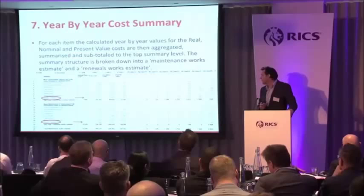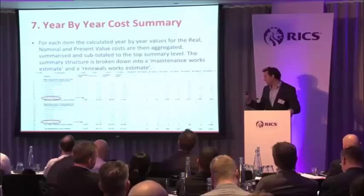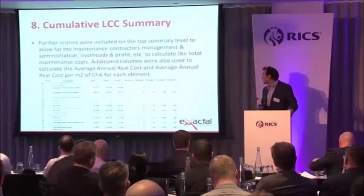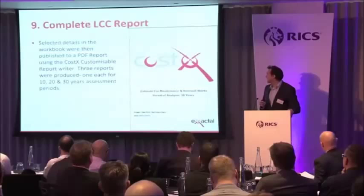Now what we wanted to do is use the NRM3 structure, which is applied to maintenance costs and renewal costs. But these calculations can be done for other operations costs such as energy costs, cleaning costs, post, et cetera — and they would be based on annual costs. The NRM structure also has markups at the bottom, so we've added in contractor's overhead and profit, VAT, tender inflation, et cetera.